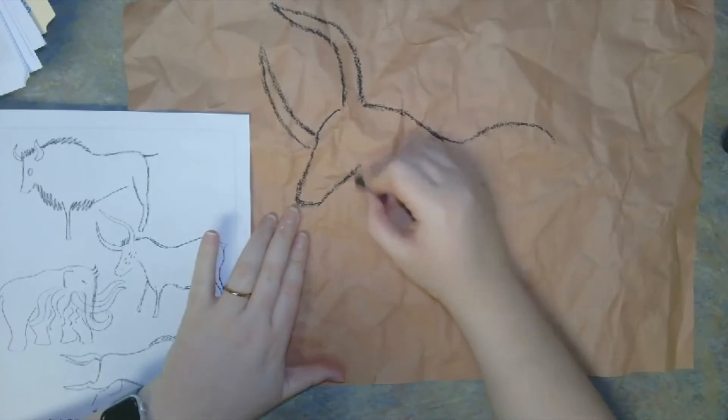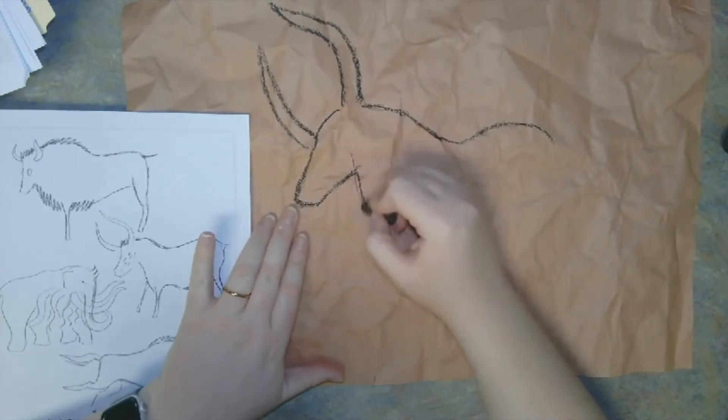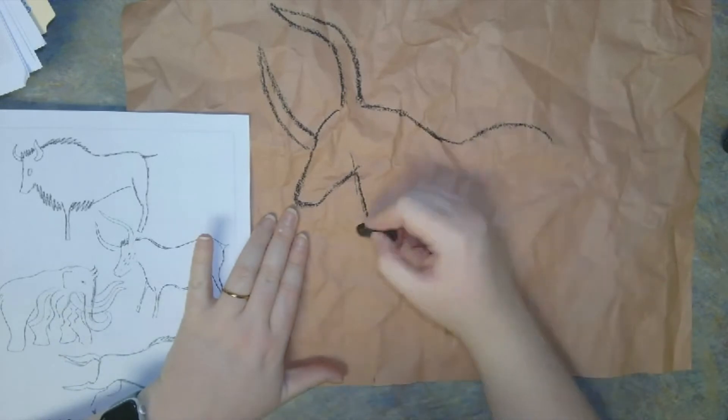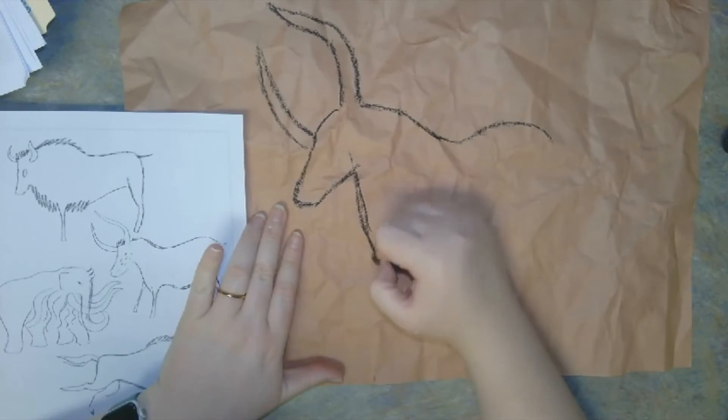Now we're going to be moving to the front of the bull again, making the neck and the chest. Starting back up under the chin, I'm going to make a straight line down. This line is actually going to move right into one of my front legs.